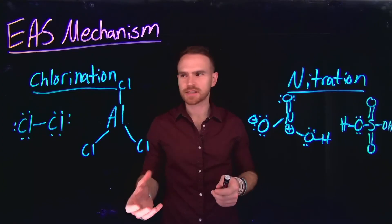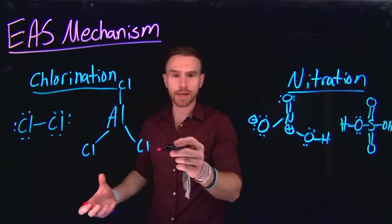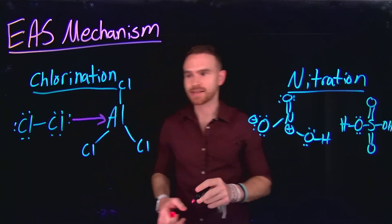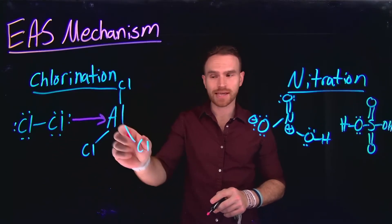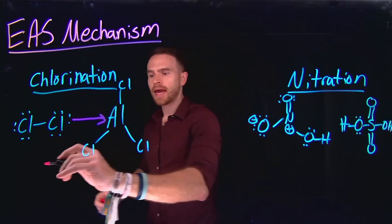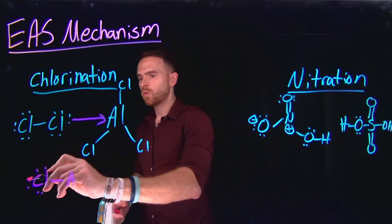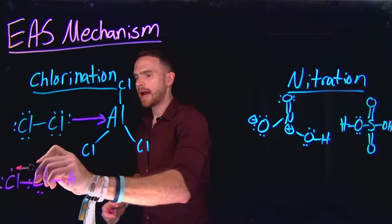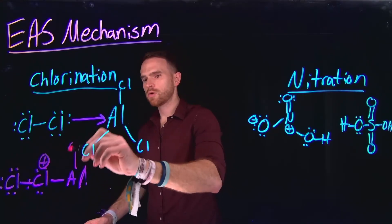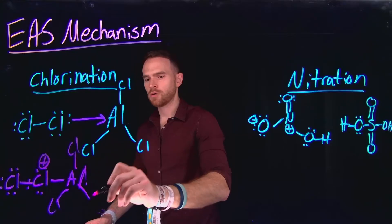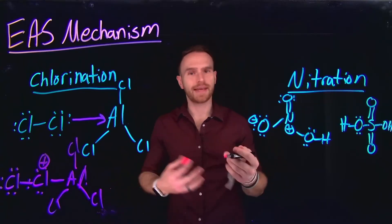Now let's take a look at the activation step for both chlorination and nitration. Similar to bromination, the first step for chlorination is activation via a Lewis acid, where the chlorine molecule at one end attacks the Lewis acid aluminum trichloride. This generates a very similar activated species where you have a partially positive charge at the chlorine and you still have your trichloride attached to the aluminum. Therefore, this can now act as an electrophile and interact with benzene.